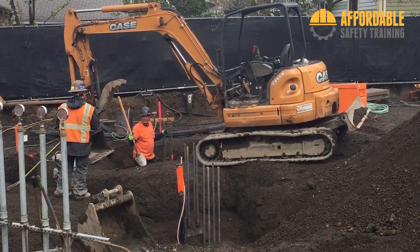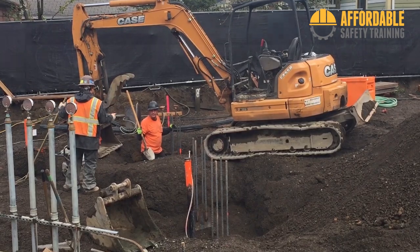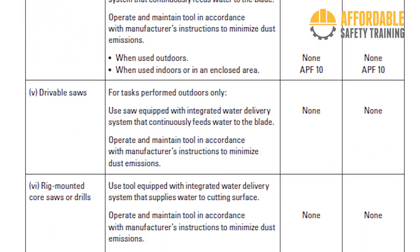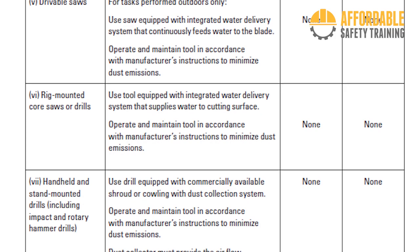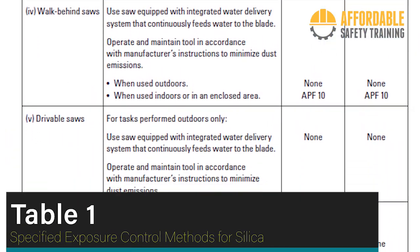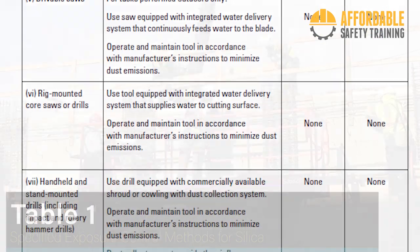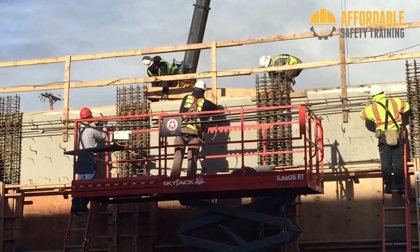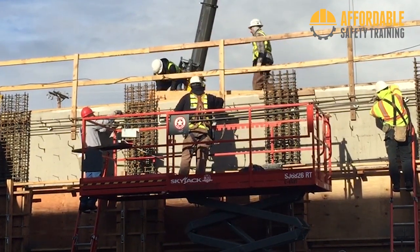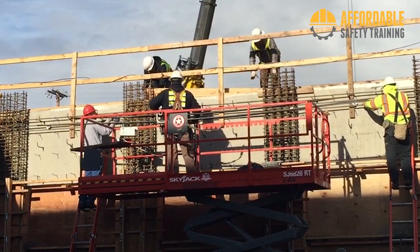OSHA created a list of common construction tasks that involve silica hazards. Each task has corresponding engineering controls and respiratory protection requirements. This list is known as Table 1, and it provides all the required steps for protecting workers. If the employer fully implements all the exposure controls listed in Table 1, no exposure monitoring or additional work controls are required.